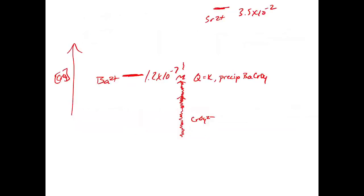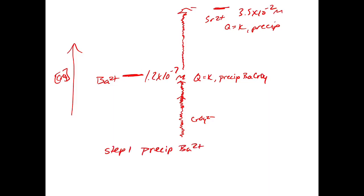Then we keep raising the chromate concentration, and finally we hit 3.5×10⁻² M, at which point Q equals K for strontium and it precipitates. So step one: we precipitate Ba²⁺; then step two, as we continue to add chromate, we precipitate Sr²⁺. You can separate barium from strontium by raising chromate concentration above where barium precipitates but below where strontium precipitates — that's fractional precipitation.